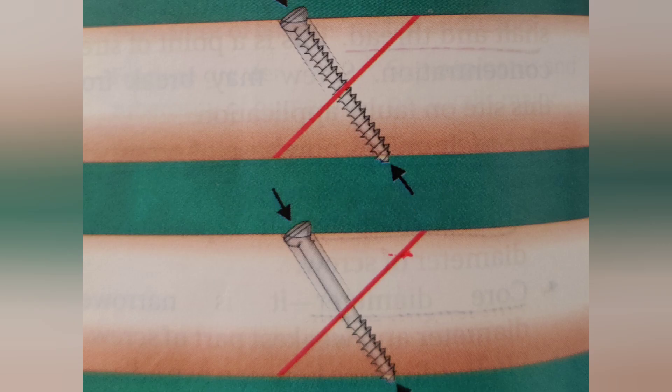Lag screw: its threads take part into the far cortex and it will provide interfragmentary compression along the fracture site.